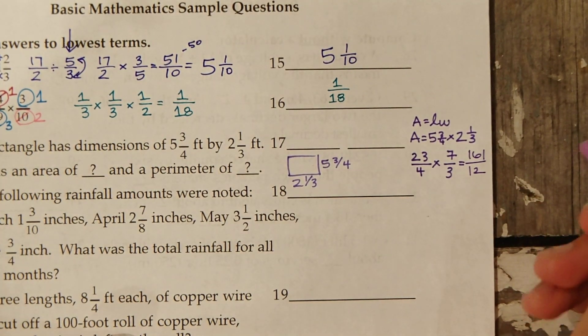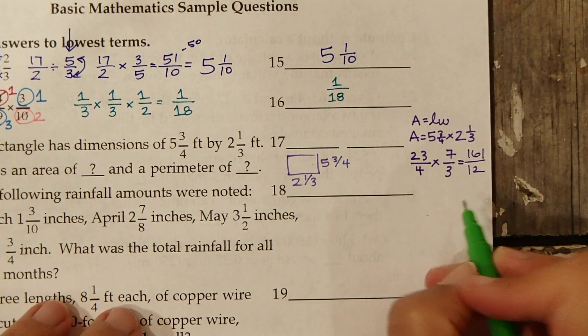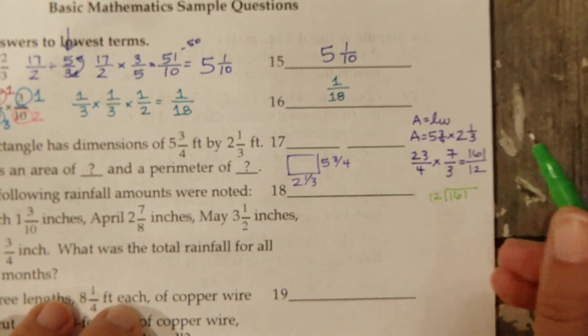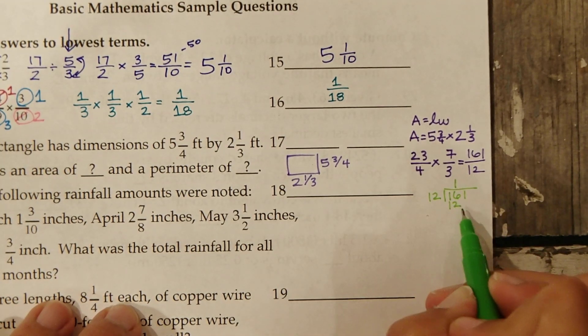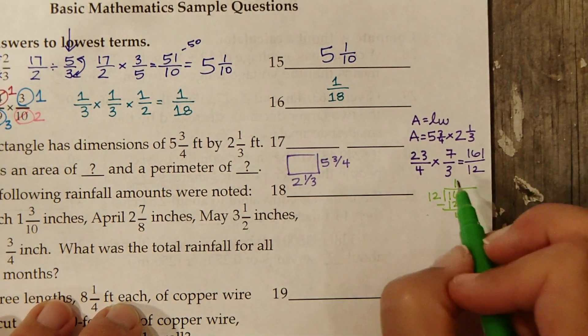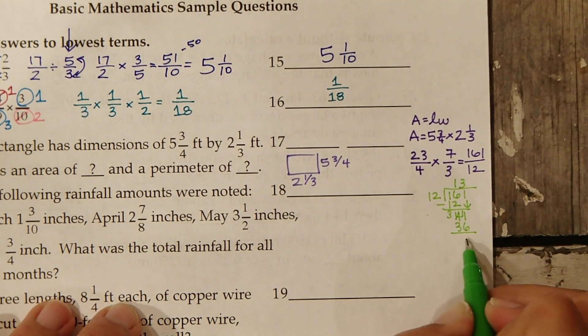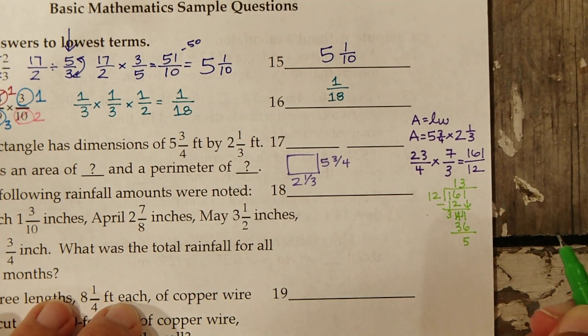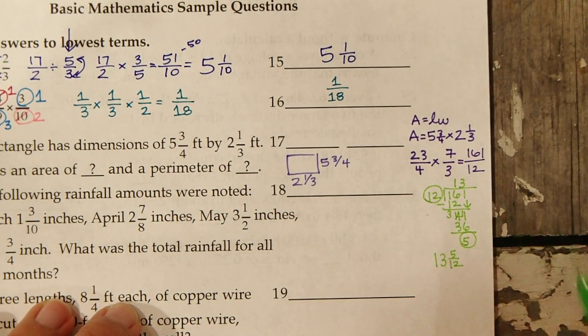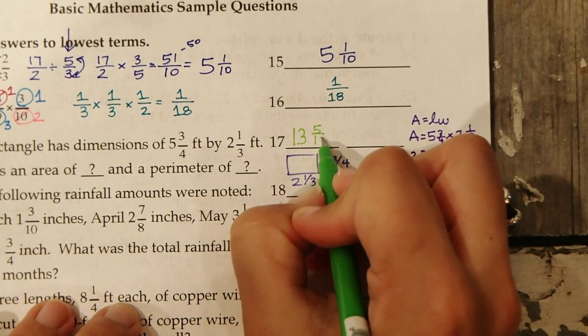Now to reduce this, we need to say how many 12s go into 161. 1 12 can fit into 16. Subtract 12, that's 4. Bring down the 1. How many 12s can go into 41? 3. That's 36. Subtract, that leaves 5. So our answer is 13 and 5 12ths. So our area is 13 and 5 12ths.